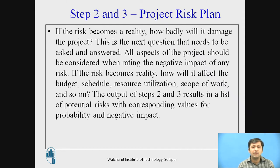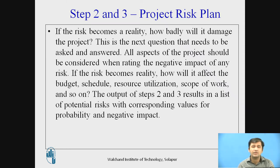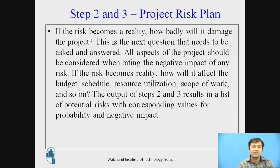Any number of questions should be asked: Impact on budget — whether budgets are going to overrun what we have planned, and if yes, by how much? What about the schedule — whether scheduling is getting delayed? Many times both budget and schedule are overrun. Resource utilization, scope — whether it is within scope or going outside. The output of Step 2 and 3 results in all potential risks with corresponding values for probability and negative impact. Risk means we are now talking of negative impact only.